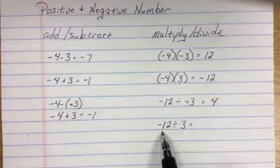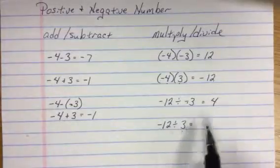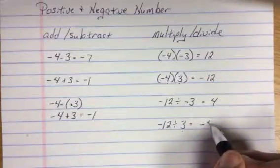Here I get negative 12 divided by positive 3. The signs are different. My answer is negative.